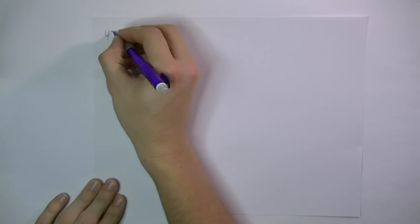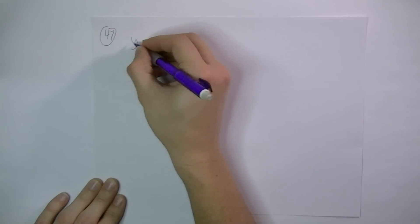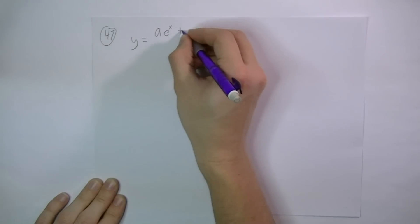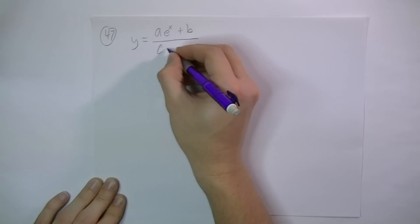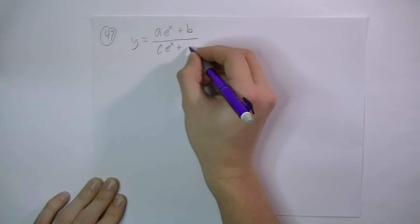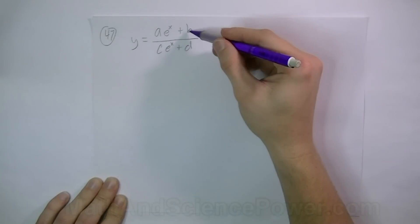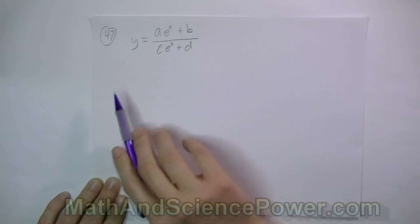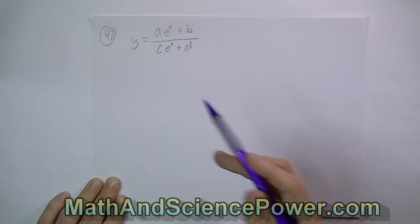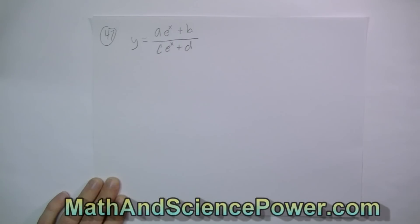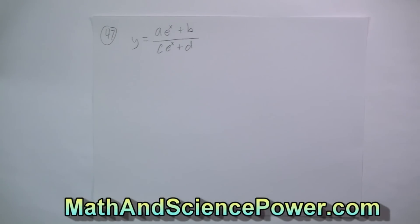Number 47. y equals a e to the x plus b divided by c e to the x plus d. So this one will require the quotient rule, and they're using letters for their coefficients and constants. This will be a challenging one. Go ahead and try this one on your own. We'll take a quick break, and when we come back we'll finish up this one and the last one, which will be the two most difficult.